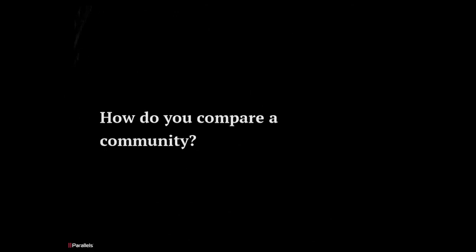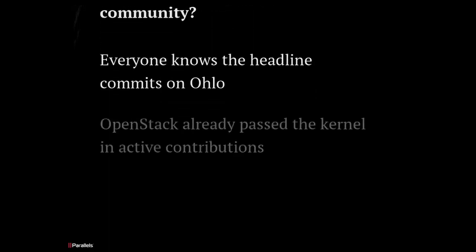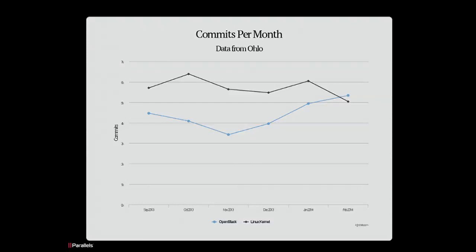One of the most difficult things is how do you compare communities that are so disparate, like OpenStack and the kernel? One thing that community comparisons often do is compare the headline commit rate — how many commits went into each project in the last month or year. Ohloh actually tracks these, and if you look at the commits there, OpenStack already passed the kernel in active contributions. In February 2014, OpenStack had more commits per month than the Linux kernel. So on that metric, you already beat the kernel — well done.